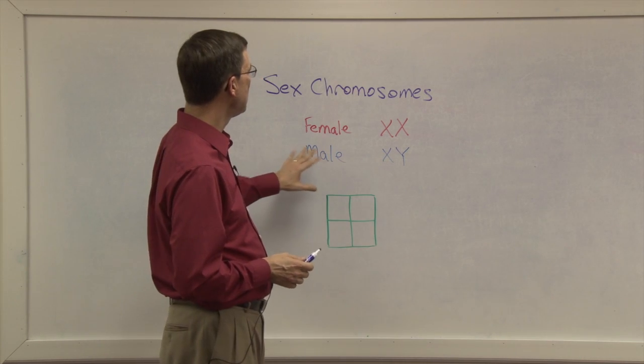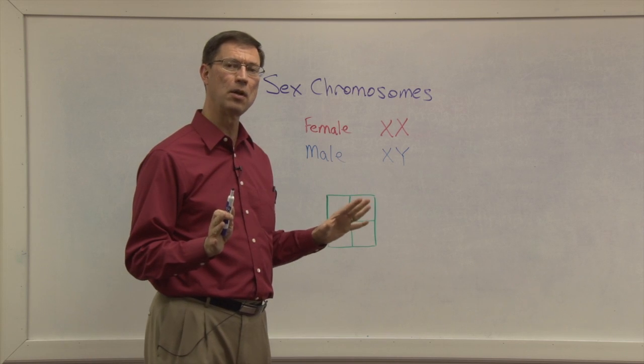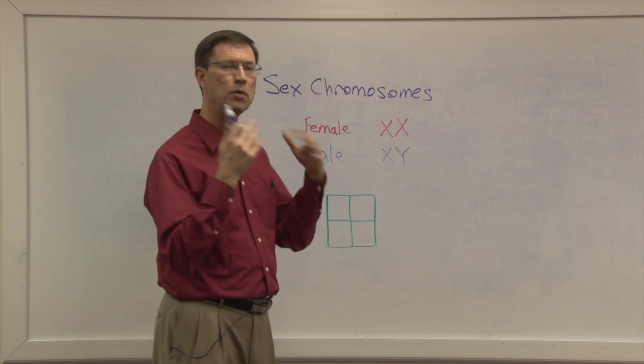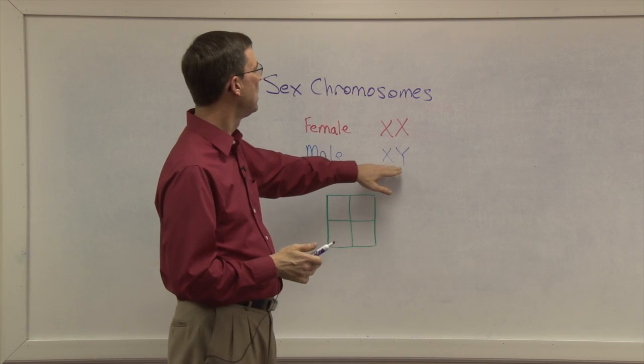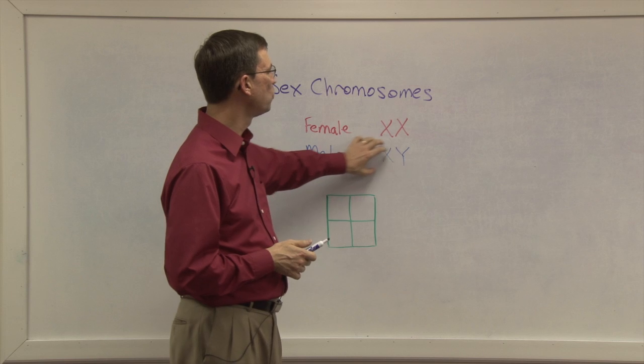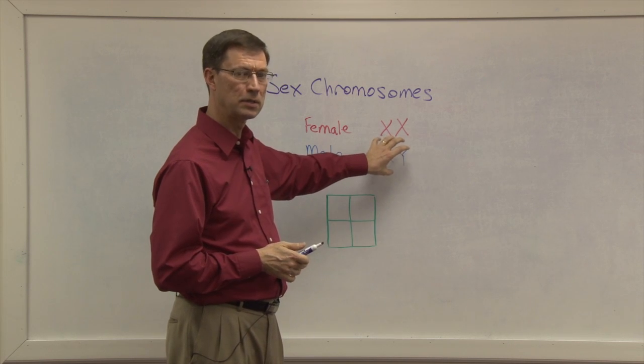We say that in every single cell of a boy's body, every single cell, whether it's the skin or the face or the muscles or the bones, the feet, anywhere, every cell has one X chromosome and one Y chromosome. So XY would be the body cells.